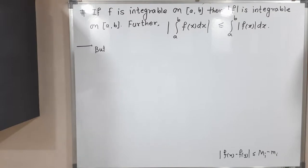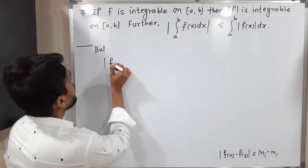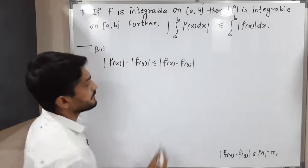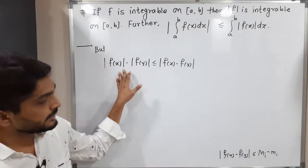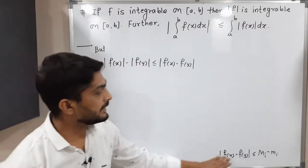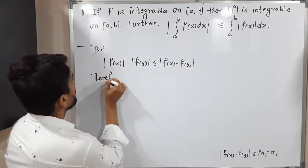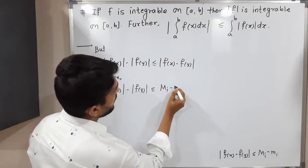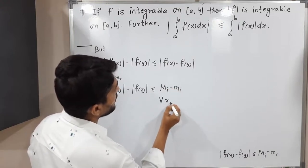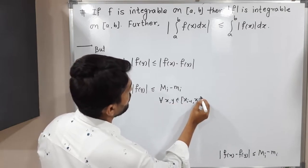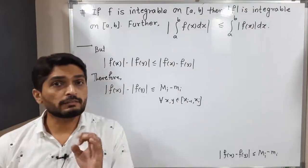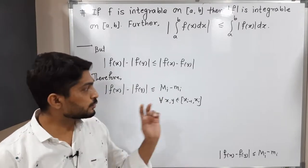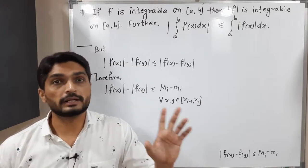Now I am going to use one property of the modulus: ||f(x)| − |f(y)|| ≤ |f(x) − f(y)|. When you take separate mods with subtraction, the value reduces. Combining these two inequalities — we have a ≤ b and b ≤ c, so a ≤ c — we get: ||f(x)| − |f(y)|| ≤ Mᵢ − mᵢ. And this is true for all x, y belonging to [xᵢ₋₁, xᵢ].